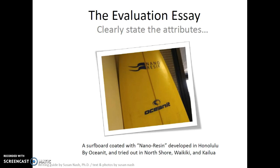So if you are looking at quality, you definitely want to know how the criteria are selected. They usually settle on or orbit around attributes. For example, let's take a look at a surfboard coated with nano-resin, developed in Honolulu by Oceanet, and tried out on the North Shore, Waikiki, and Kailua.